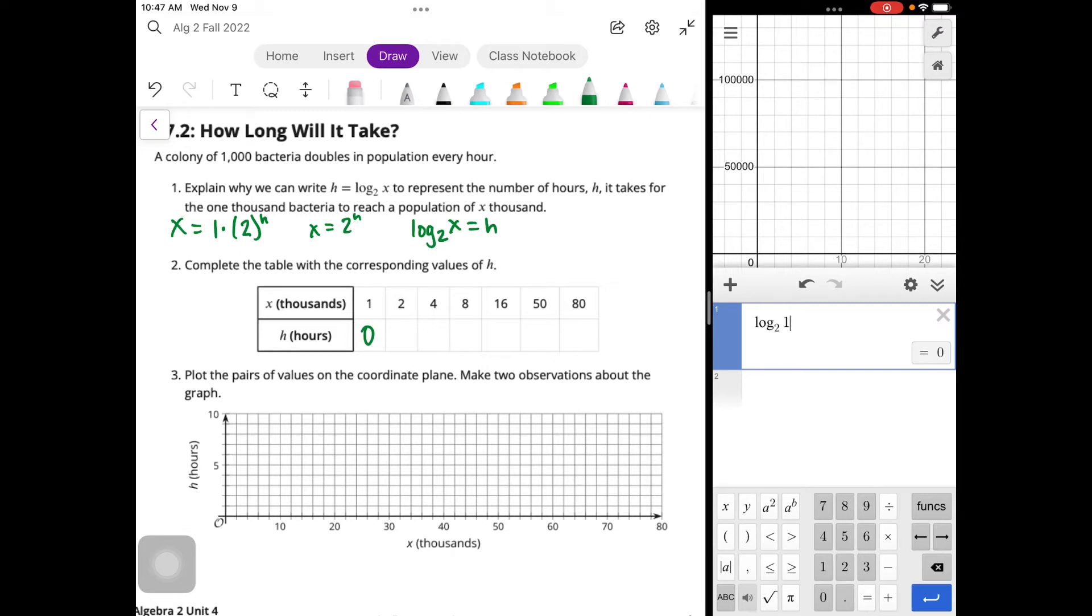If we plug in 1, we get 0 hours. And then if we plug in 2, we get 1 hour. If we plug in 4, we get 2. If we plug in 8, we get 3. If we plug in 16, we get 4. Plug in 50, here's where we start to get our decimals, and we'll write that as 5.64. And then if we plug in 80, we get 6.32.